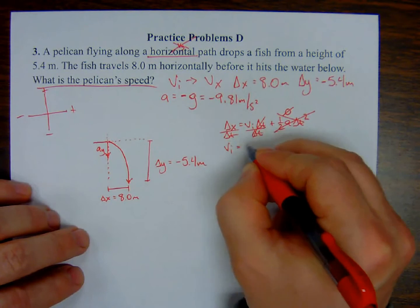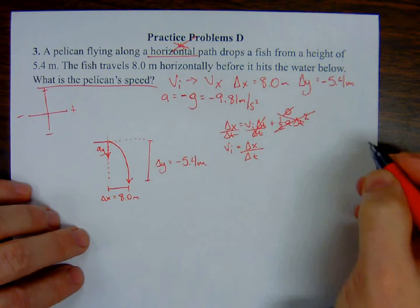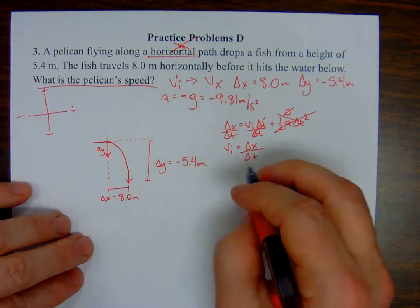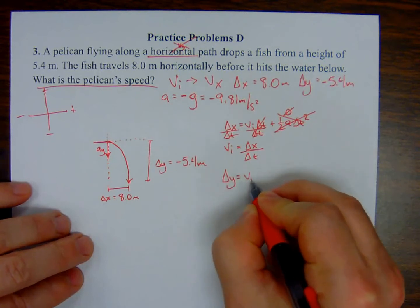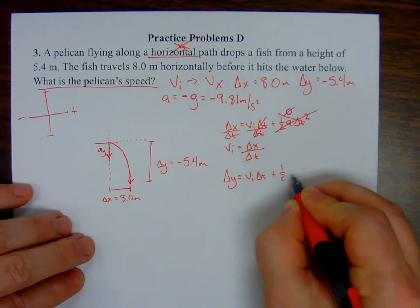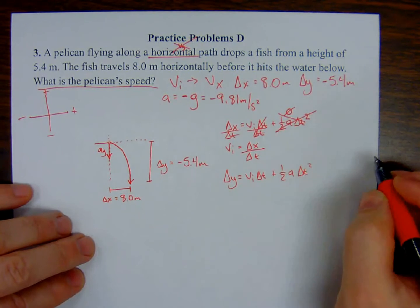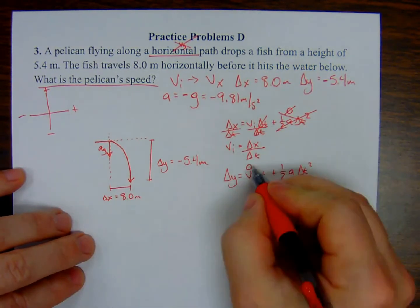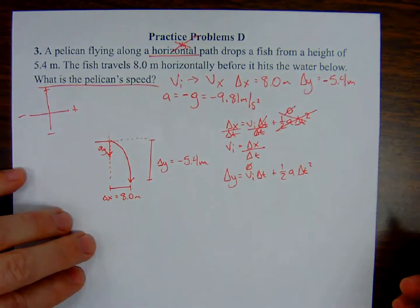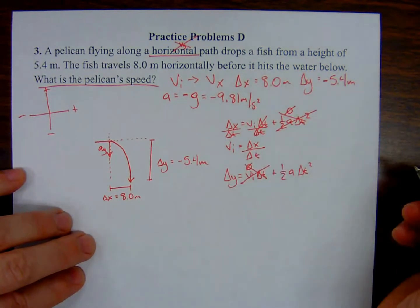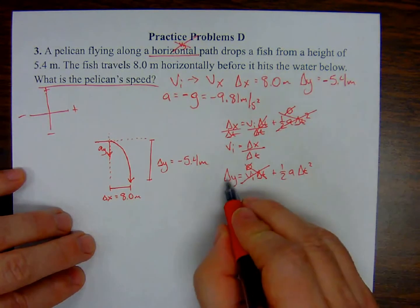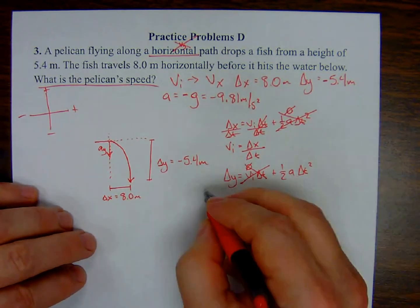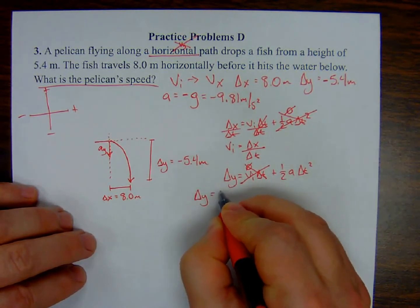Now let's consider the displacement in the y direction. Displacement in y equals initial velocity times time plus one-half acceleration times delta t squared. There is no initial velocity in the y direction, so that term is zero. That means delta y equals one-half acceleration times time squared. If I can solve for time, I can plug that into the delta t expression, and because I already have a delta x, I'll be able to solve for my initial velocity.